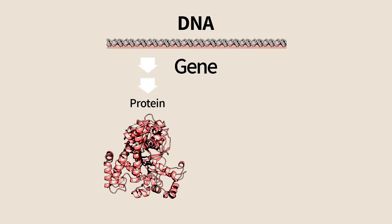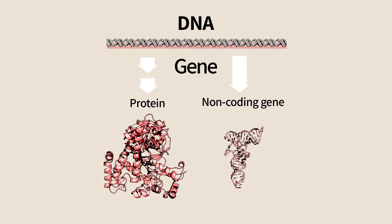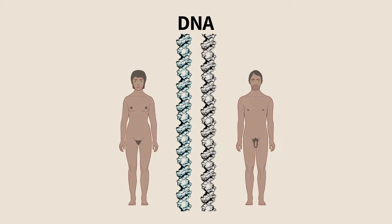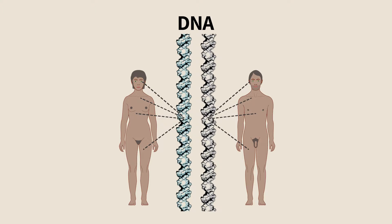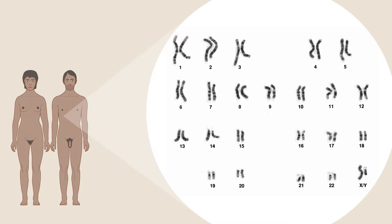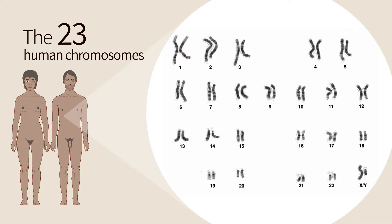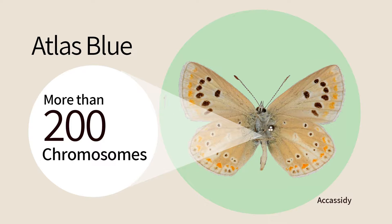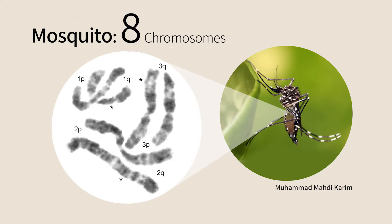There are also genes that do not encode proteins, and regions that regulate when and where genes will be expressed. Each and every one of our cells contains in its nucleus the same DNA and has all the information to build an entire human being. Our DNA is packaged in 23 different chromosomes. The number of chromosomes varies widely among different organisms, from a single chromosome in a certain ant species to 200 chromosomes in a certain butterfly. Most organisms have several tens of chromosomes.